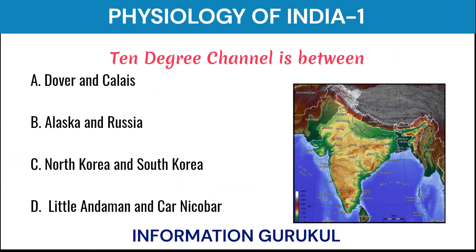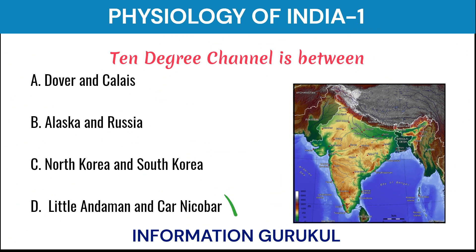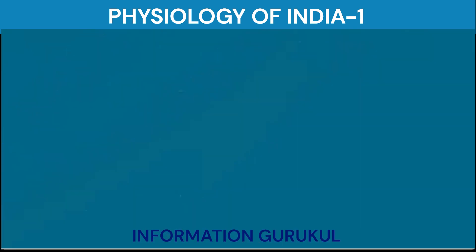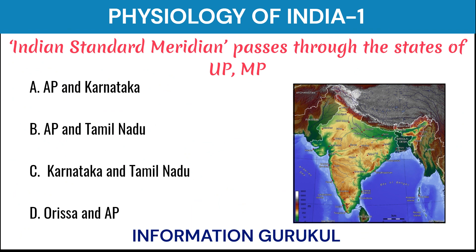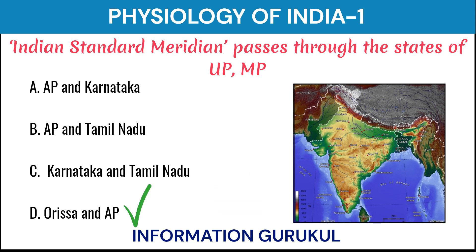The 10 degree channel is between Little Andaman and Car Nicobar. The Indian Standard Meridian passes through the states of Uttar Pradesh, Madhya Pradesh, Odisha, and Andhra Pradesh.